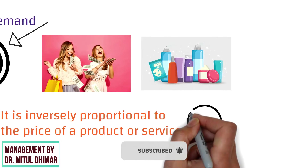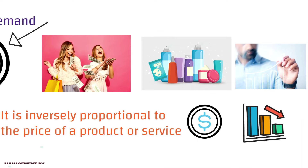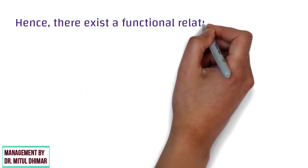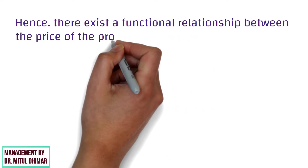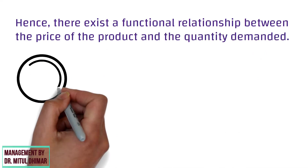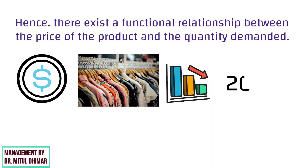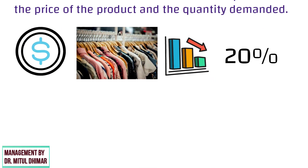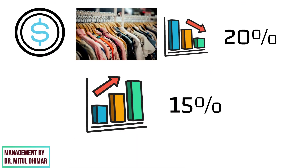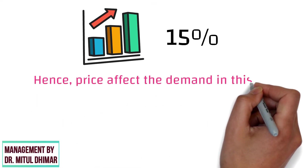Which means, if the price decreases then the demand increases, or vice versa. Hence, there exists a functional relationship between the price of the product and the quantity demanded. For example, if the price of your favorite apparels falls by 20 percent, then there will be an increment in demand of 50 percent. Hence, price affects the demand in this way.